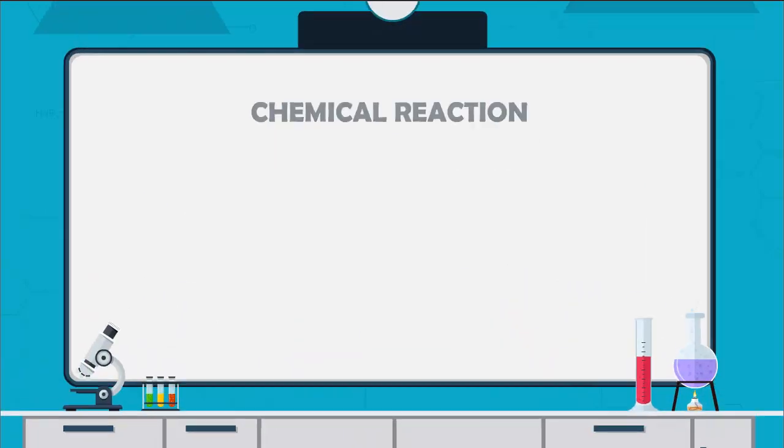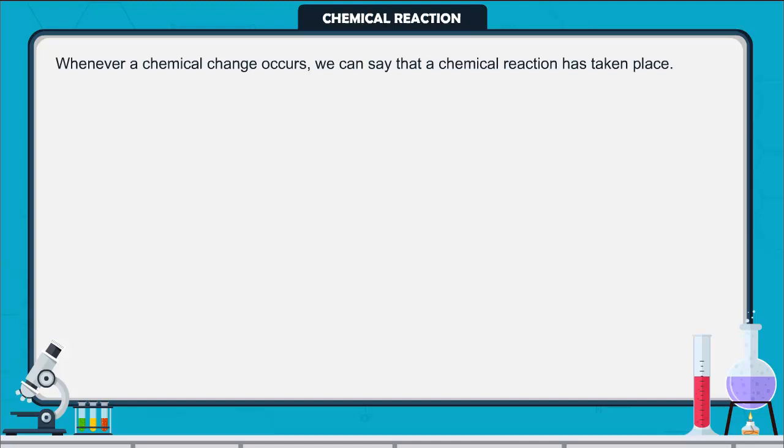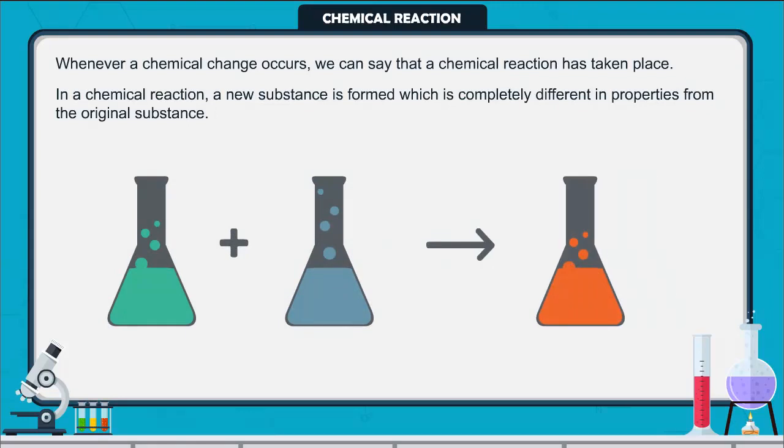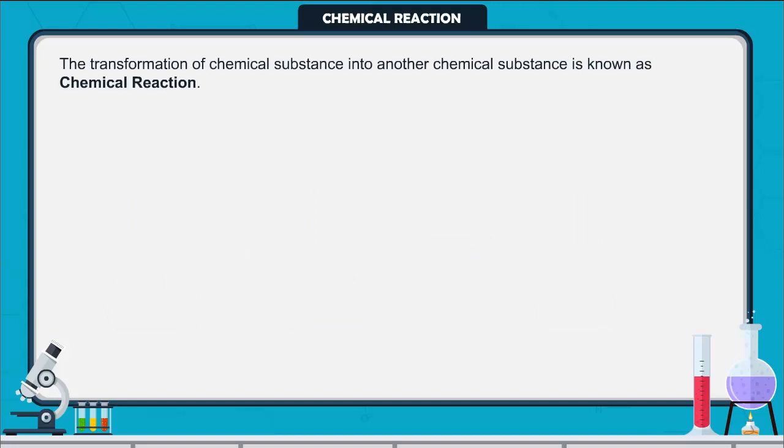Chemical reaction: Whenever a chemical change occurs, we can say that a chemical reaction has taken place. In a chemical reaction, a new substance is formed which is completely different in properties from the original substance. The transformation of chemical substance into another chemical substance is known as chemical reaction.